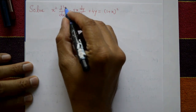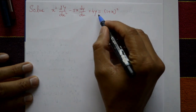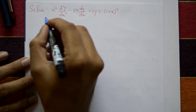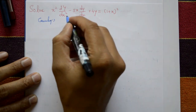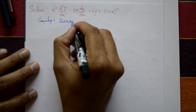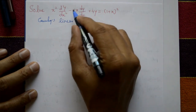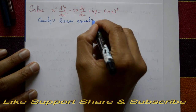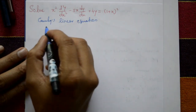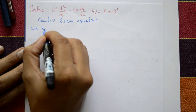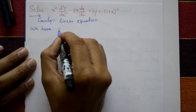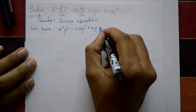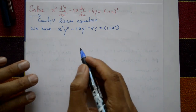Solve x² (d²y/dx²) minus 3x (dy/dx) plus 4y equal to (1+x)². Now this is a Cauchy's linear equation. The general form is: ax² y'' minus xy' plus y equal to f(x) is a Cauchy's linear equation. So write the equation: x² y'' minus 3x y' plus 4y equal to (1+x)².